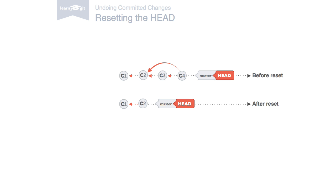A different way to undo commits is the reset command. It works by resetting your head branch to an older revision, also called rolling back to that older revision. After this command, your currently checked-out branch will be at the named revision, and the files in your working copy will be exactly as they were in that revision. All the commits that came after this one are effectively undone — they are no longer visible in the history of this branch.